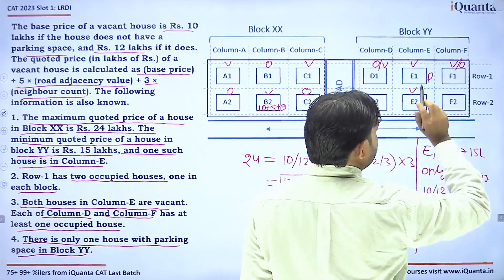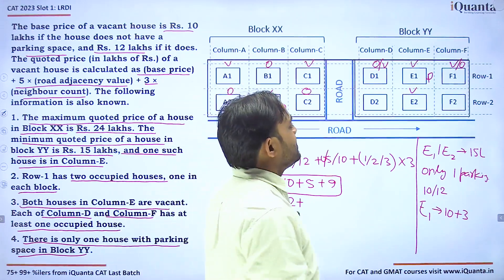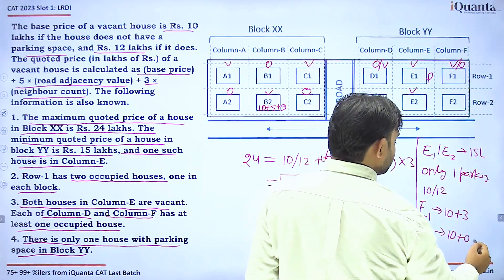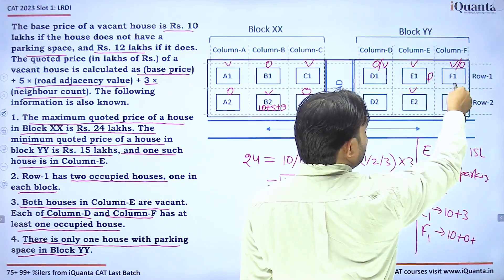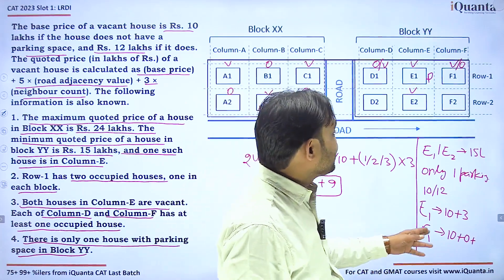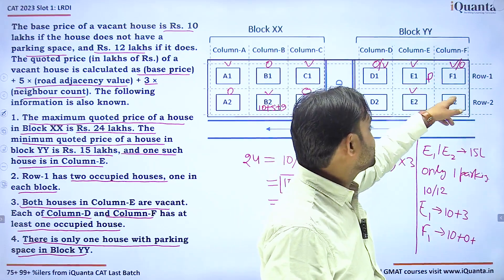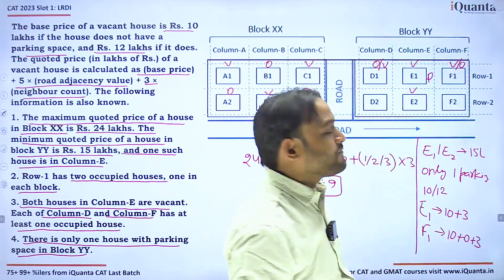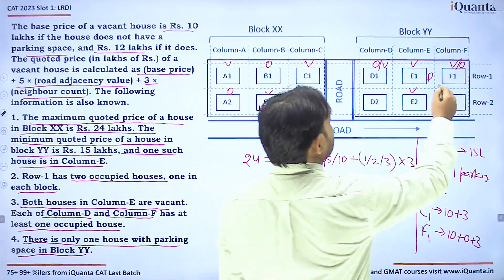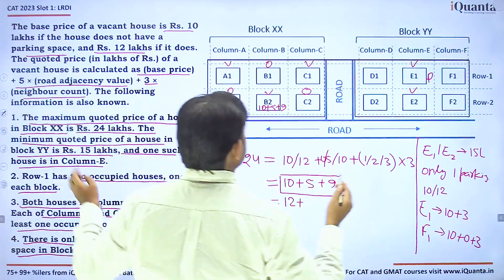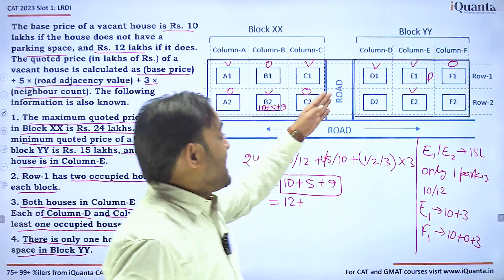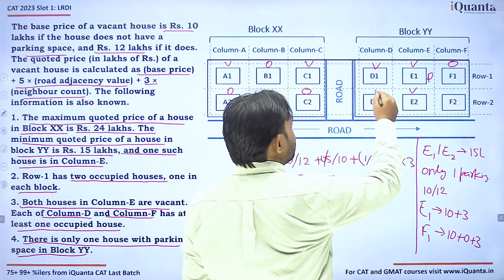Since E1 has the only parking in Block YY, F1 has no parking. Even if F2 is occupied, F1's maximum price would be 10 + 0 + 3 = 13 lakhs, which is below the Block YY minimum of 15. This means F1 cannot be vacant — F1 must be occupied. If F1 is occupied, D1 must be vacant (only one occupied house in Row 1 per block). Since at least one of D1 or D2 must be occupied, D2 must be occupied.